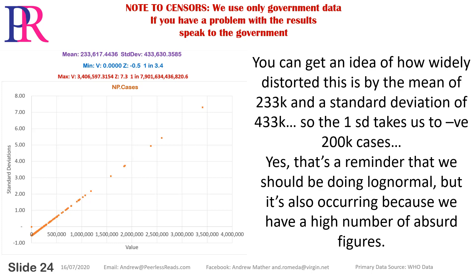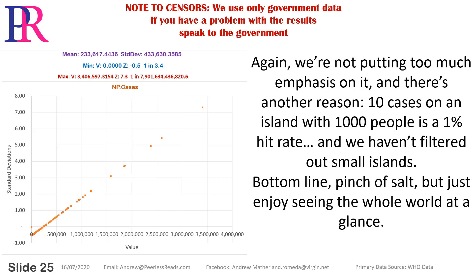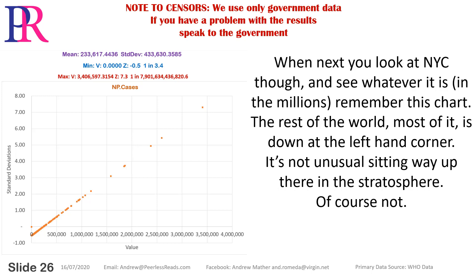You can see how widely distorted this is: mean of 233k with a standard deviation of 433k, meaning one standard deviation takes us to negative 200k cases — a reminder we should be doing log-normal. It's also occurring because we have a high number of absurd figures. There's another reason: 10 cases on an island of 1,000 people is a 1% hit rate, and we haven't filtered out small islands. Bottom line: pinch of salt, but just enjoy seeing the whole world at a glance.